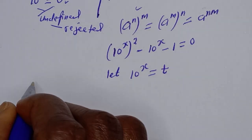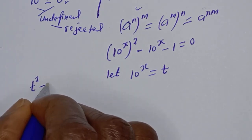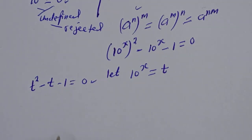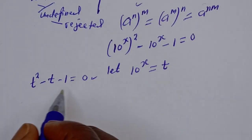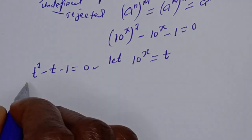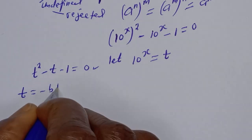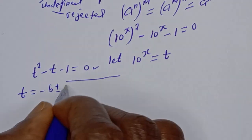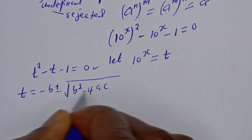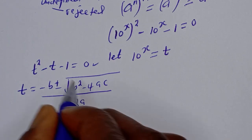We can now let 10 raised to power s equal to t. Then we have t squared minus t minus 1 is equal to 0. This is a quadratic equation. Let's solve this using the quadratic general formula, which is given as t equals minus b plus or minus square root of b squared minus 4ac, over 2a.